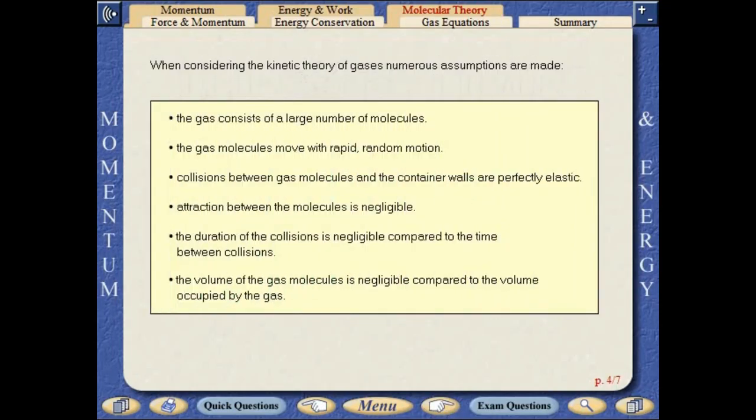When considering the kinetic theory of gases, numerous assumptions are made. The gas consists of a large number of molecules. The gas molecules move with rapid random motion. Collisions between gas molecules and the container walls are perfectly elastic. Attraction between the molecules is negligible. The duration of the collisions is negligible compared to the time between collisions. The volume of the gas molecules is negligible compared to the volume occupied by the gas.